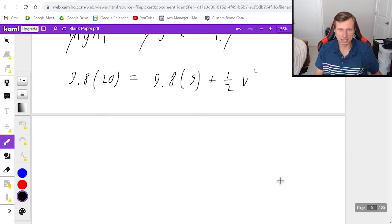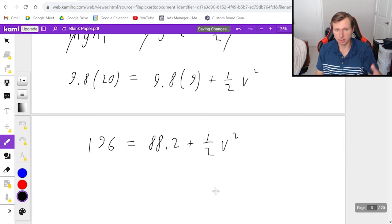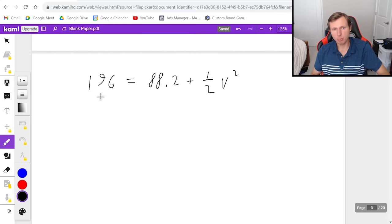So that's just going to be 9.8 times the height 1, which is 20, equals again 9.8 times height 2, which is 9, plus 1 half velocity squared. And now we're solving for velocity. So on the left side, let me plug this in my calculator. I got 196. And then on the right side, I'm getting 88.2 plus 1 half V squared. From here, it's just the algebra part. This part's easy.